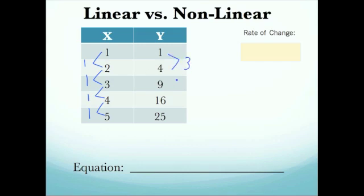Now, if this is a linear equation, we should expect, because all these are 1's, that all of these should also be the same, or they should be 3's. But what we find out is the next one is 5. The next one is 7. The next one is 9.